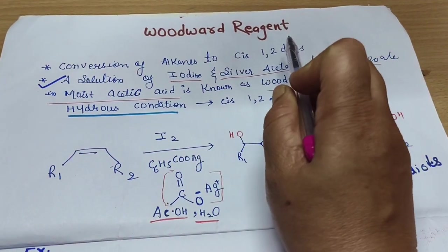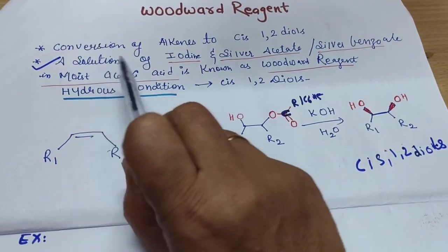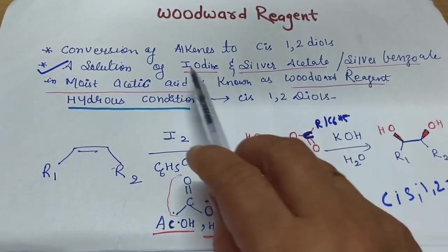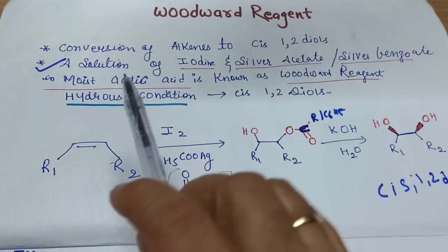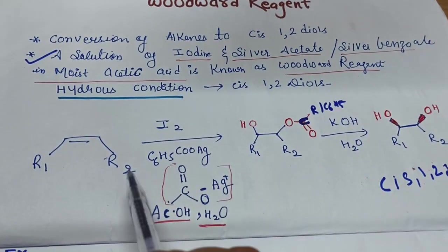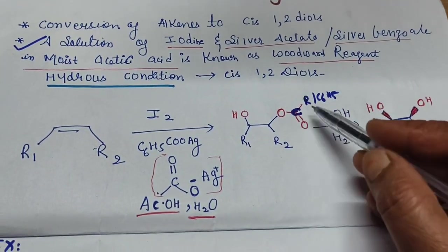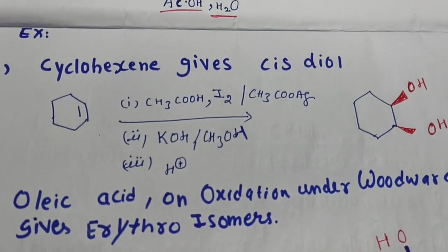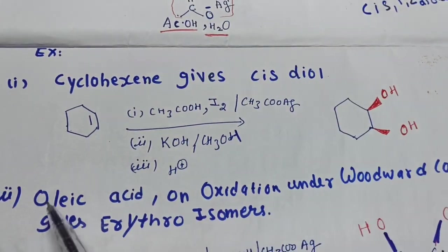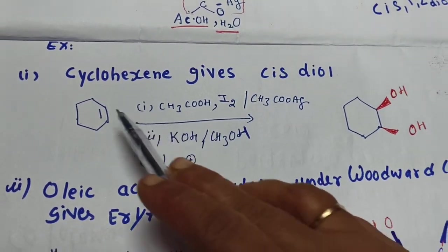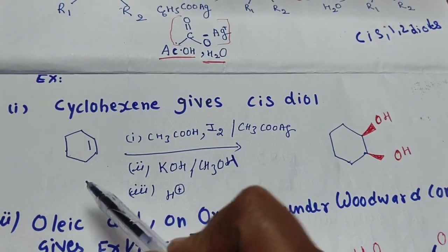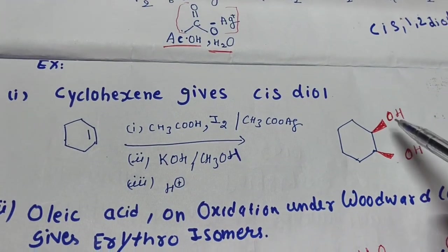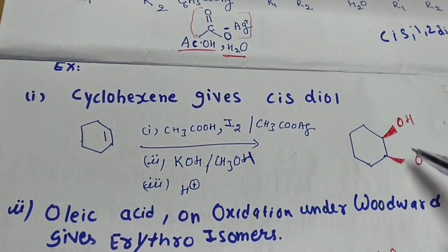The Woodward reagent is a solution of iodine and silver acetate or silver benzoate in moist acetic acid. The Woodward reaction involves the conversion of alkenes to cis-1,2-diols under hydrous conditions — water is required in this reaction. Any alkene first gets one OAc group attached, and then is converted to cis-1,2-diols. For example, cyclohexene treated with Woodward reagent gives cis-diols, where both OH groups are present on the same plane — both represented by solid wedges above the plane of the paper.